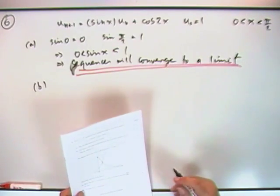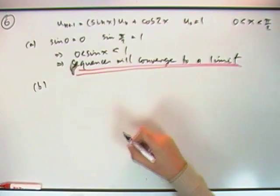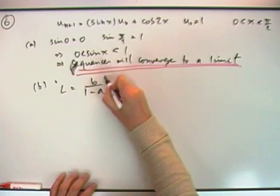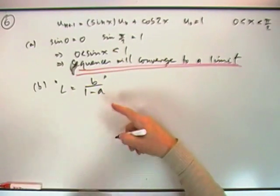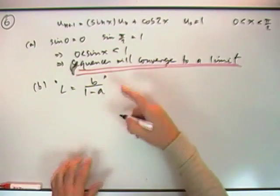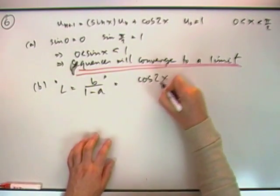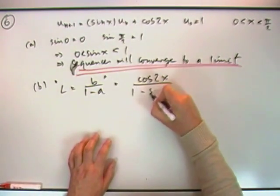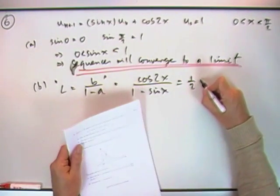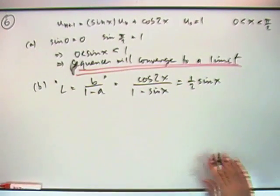Part b, the limit of one sequence is a half sine x. Find what it is. Right. Well, the limit, you could use that formula, b over 1 minus a. I'll just put in a bracket, because any of these letters actually exist. So the limit is equal to, what does that say again? A half sine x. So I've got this pattern here then. I'm going to have b is cos 2x, a is sine x, and that's to equal a half sine x.